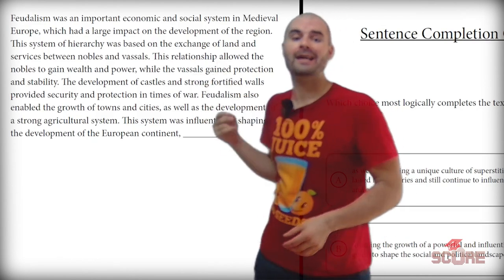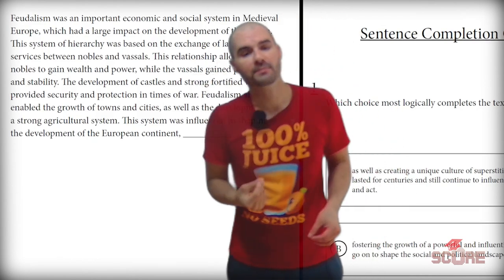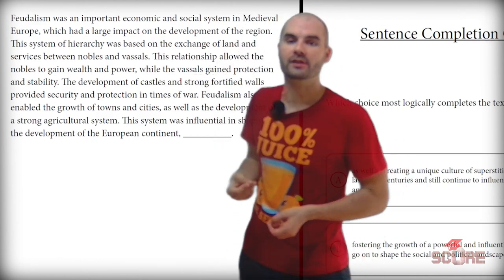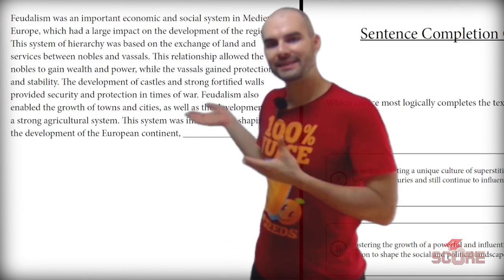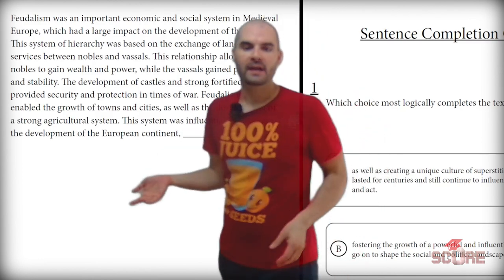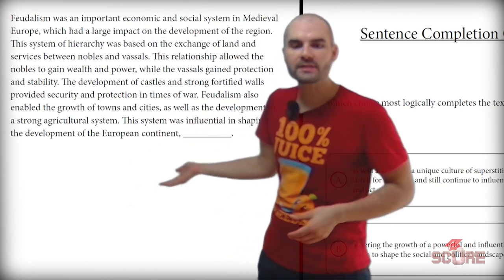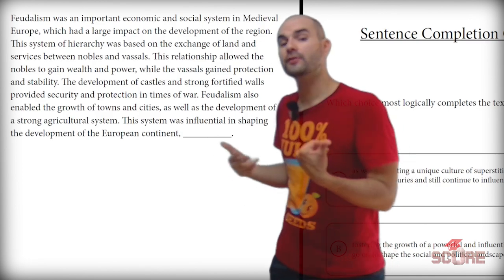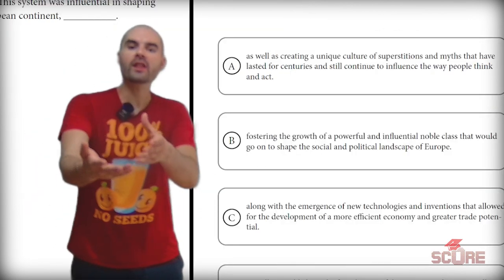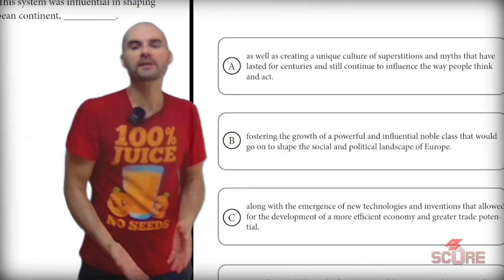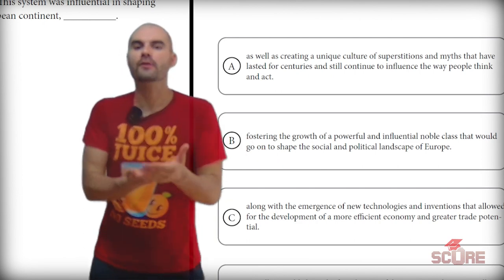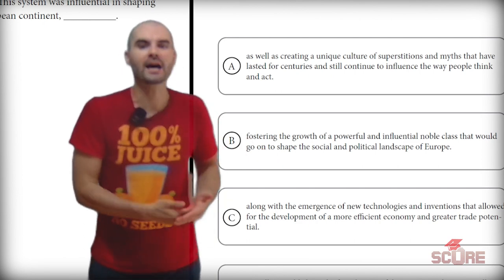Feudalism was an important economic and social system in medieval Europe, which had a large impact on the development of the region. I'm going to look now at the final sentence. It says: this system was influential in shaping the development of the European continent. All I want to do with sentence completion is take a look at the answer choices that stay most focused on that topic.